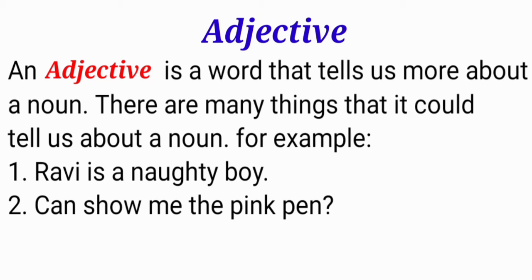Now we will see the first example: 'Rabi is a naughty boy.' In this sentence, the word 'naughty' is an adjective — it tells us more about the noun 'Rabi.' The question that arises is: what kind of boy? So here, the adjective tells us more about the noun, and the answer is 'naughty.'